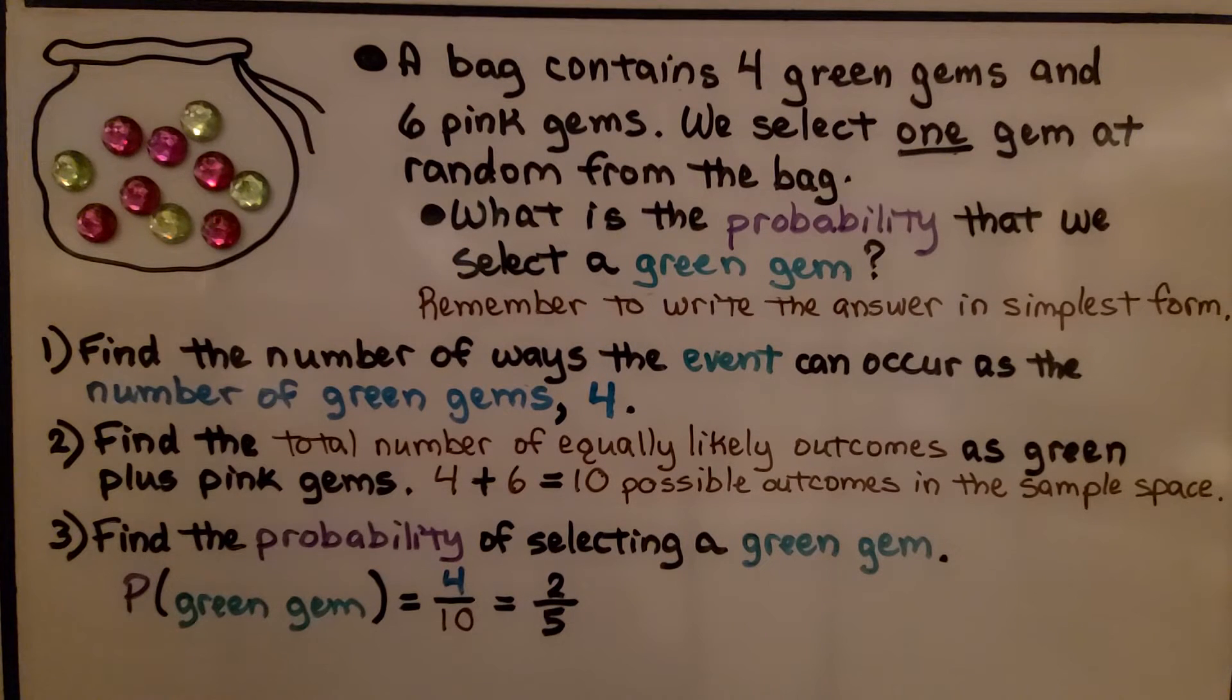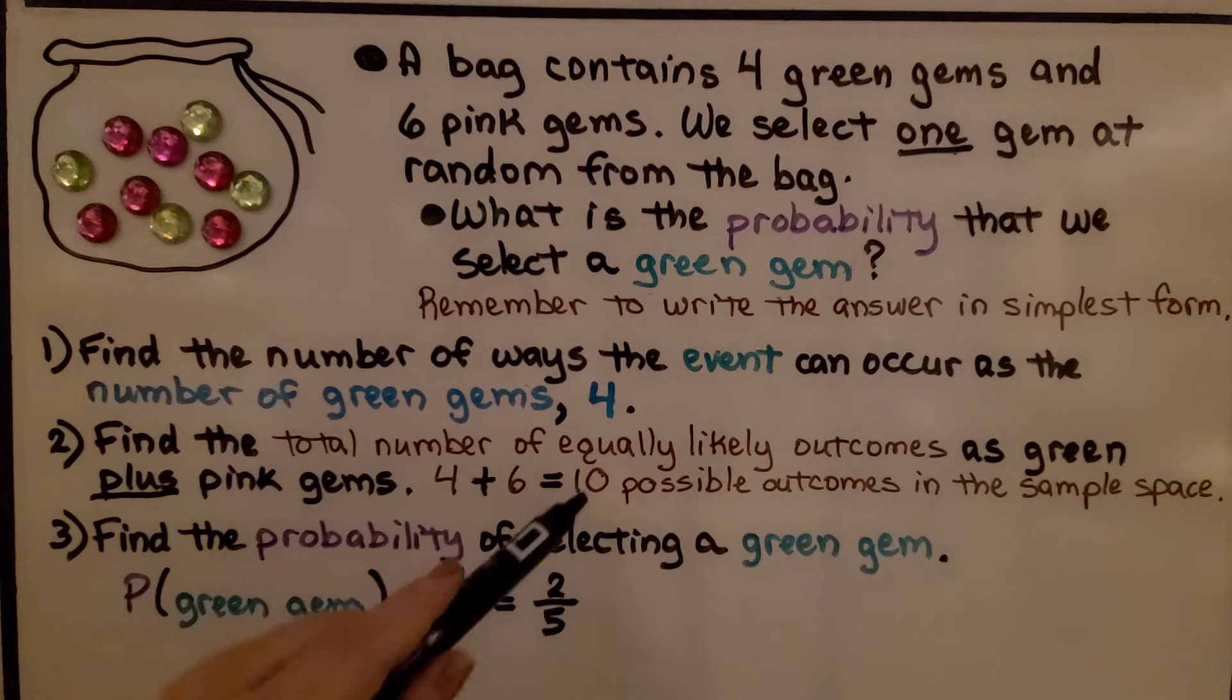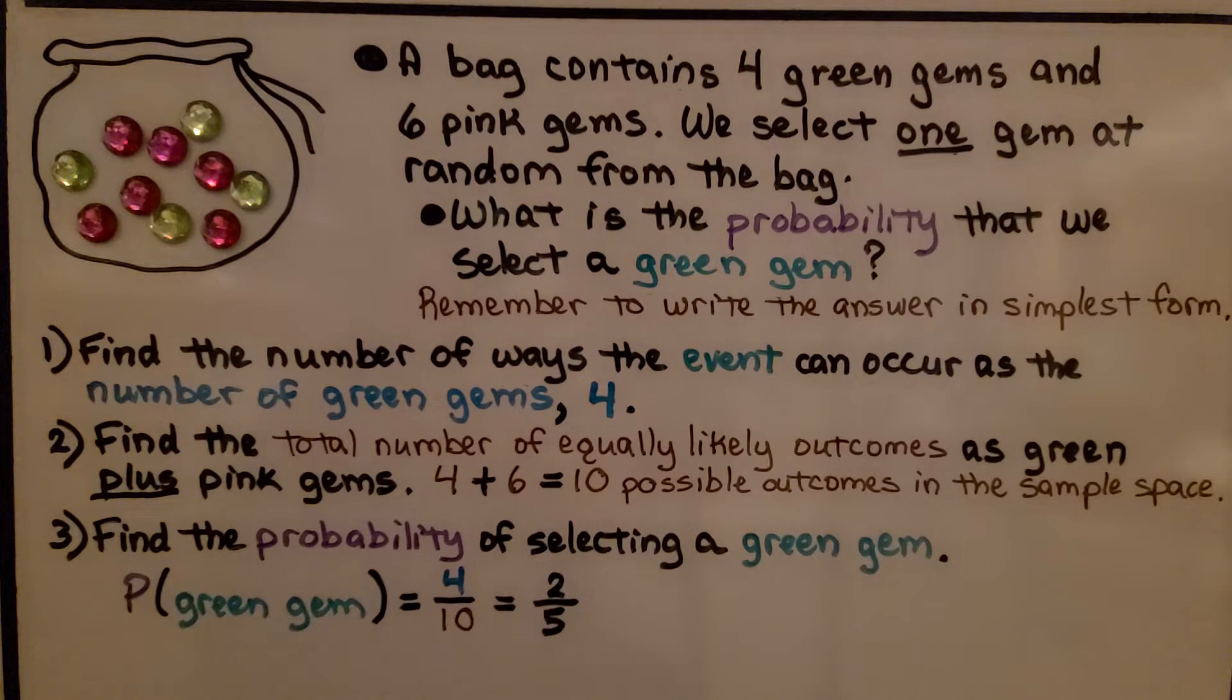So the probability of two heads is equal to three-eighths. We can also write it as 0.375 as a decimal or 37.5 percent. A bag contains four green gems and six pink gems. We select one gem. We stick our hand in the bag and we pick one randomly from the bag. What is the probability that we select a green gem? Remember to write the answer in simplest form. First, find the number of ways the event can occur as the number of green gems. There's four of them. Then we find the total number of equally likely outcomes as green plus pink. So we're going to add the green plus the pink gems. That's going to be four plus six. That's ten possible outcomes in the sample space.